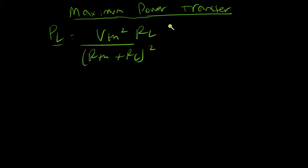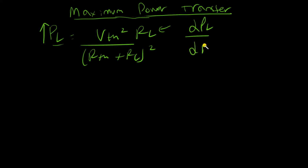I need a value of RL that makes PL maximum. For those familiar with calculus, you find the derivative dPL/dRL and equate it to zero. At whatever value of RL this derivative equals zero, that is the point where PL is maximum. So let's find that derivative using the quotient rule.